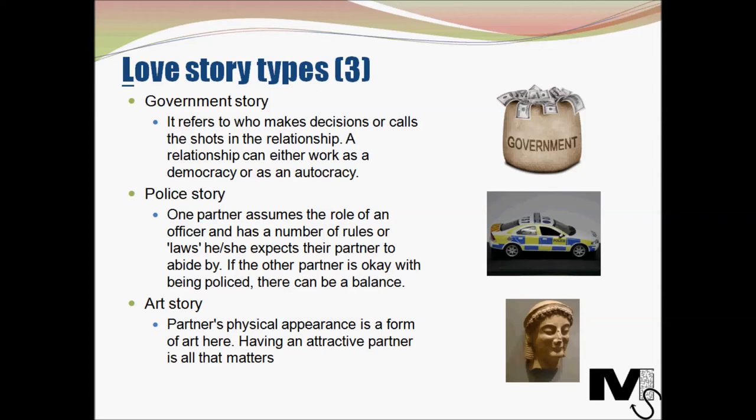The next story type is the art story type. In this type of story, a person considers his or her partner's physical appearance as a form of art, so the physical appearance of the partner becomes the most important aspect in the relationship. There is such emphasis on physical appearance that aspects like a lack of personality or bad behavior can be completely ignored. Such people could also sometimes be okay to receive some level of abuse from their partner, so long as the partner is attractive and fits the image of being an object of art for that person.